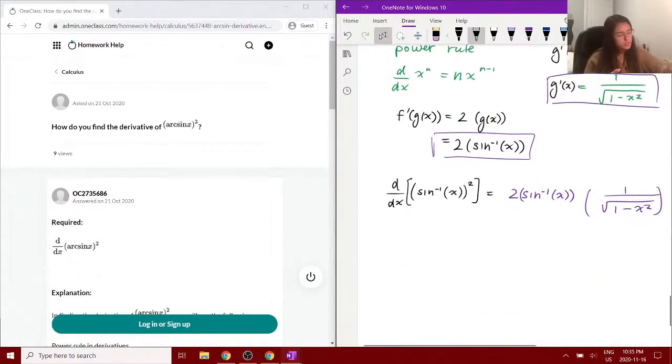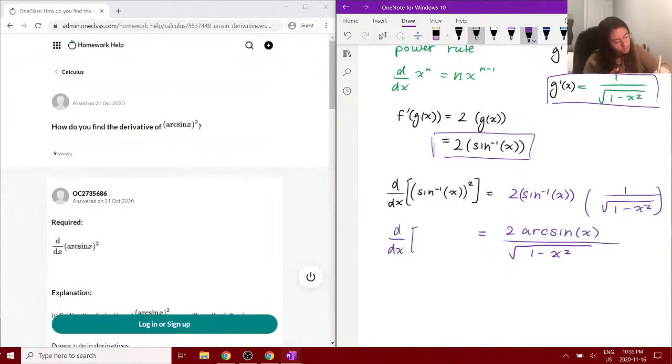And if I just write this a little nicer, we have 2 times arc sine all over the square root of 1 minus x squared. This is our final solution. So this is the solution with the derivative of arc sine squared, and that is the final solution.